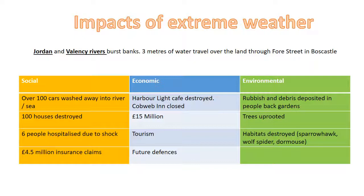Environmentally it's a bit more tricky, but you do need an environmental impact. Start with habitats being destroyed: rivers burst their banks, destroying habitats on the riverbanks. The classic examples are the sparrowhawk, wolf spider, and dormouse. Sparrowhawks' nests are destroyed when trees are uprooted, so sparrowhawks leave the area. Initially you might argue this would destabilise the food web, but since the wolf spider and dormouse habitats are also destroyed, there is even less prey available — so the key idea is that destruction of habitats leads to a collapse of the ecosystem.